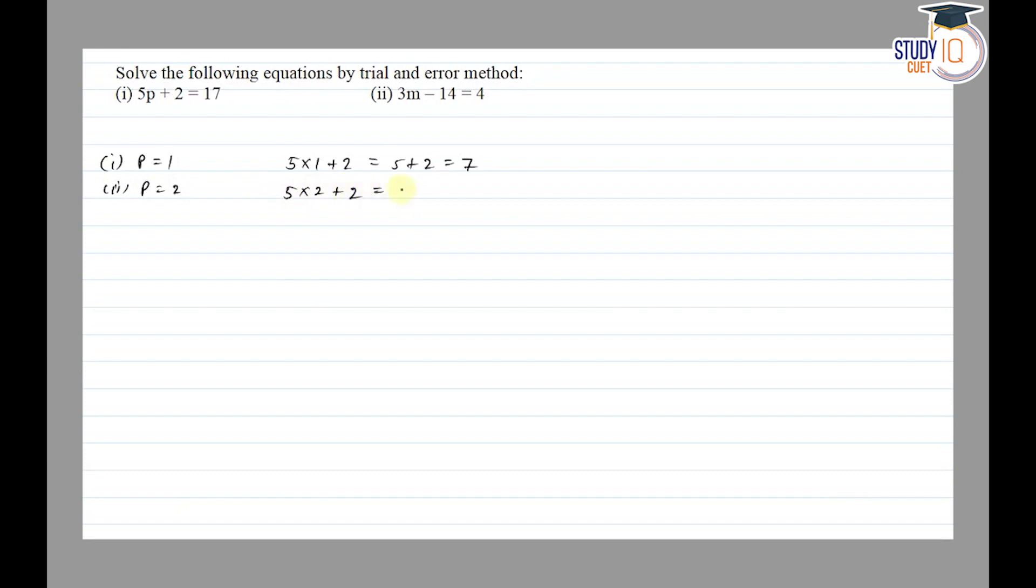Next, p equals 2. So 5 into 2 plus 2 equals 10 plus 2 equals 12. Now 12 is not equal to 17, which means p equals 2 also does not satisfy the equation.